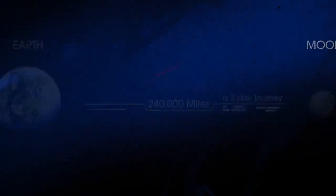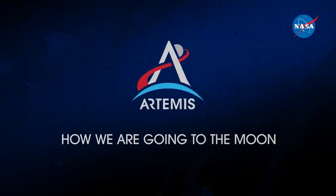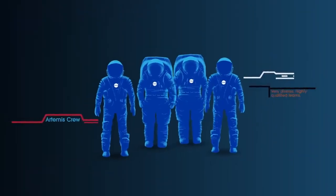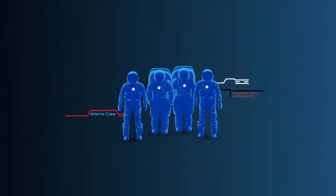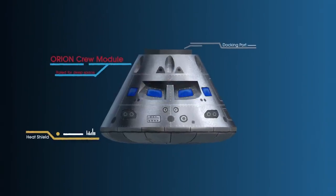So, what will an Artemis mission look like? Everything is designed and tested with our most important element in mind, the astronauts. This is their deep-space, human-rated spacecraft called Orion, built in three parts.